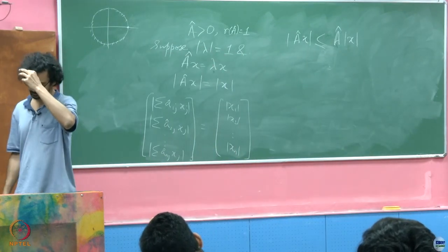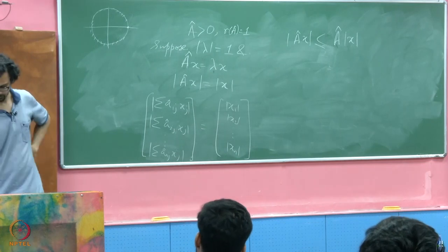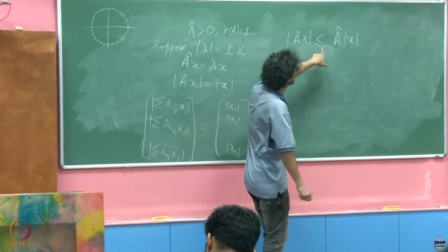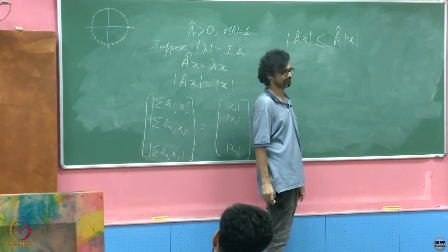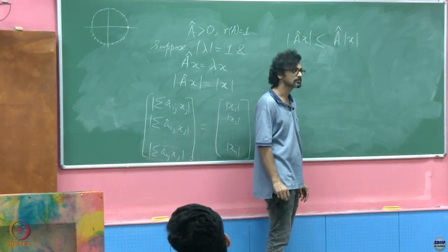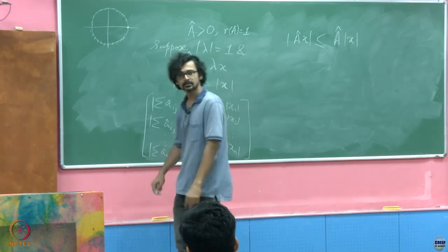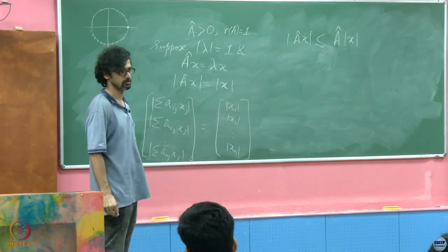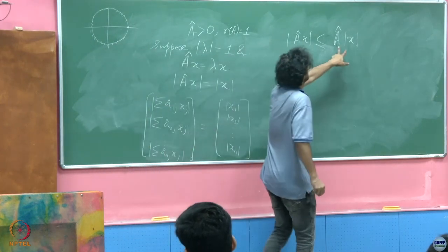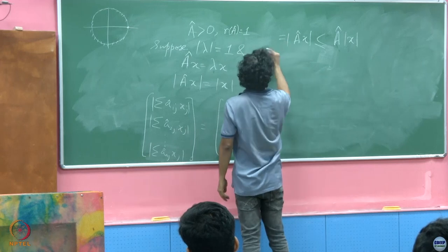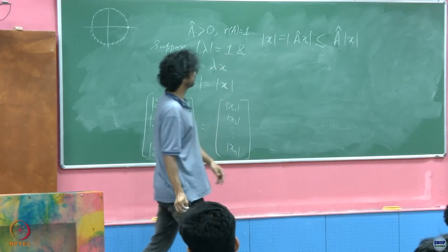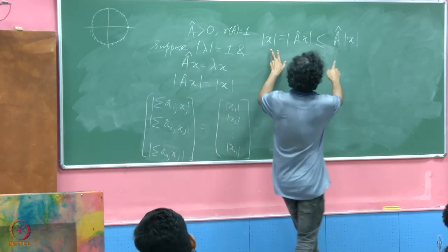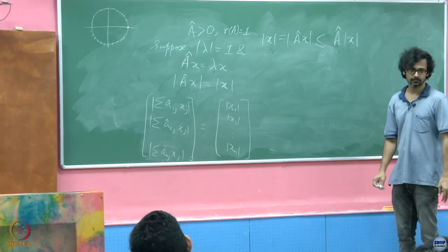If this inequality is true — and not just true but actually equal — then we will be done, because we started with the assumption that |λ| = 1. So we are led to the conclusion that |Â x| = Â |x|, and if we can show this is actually an equality, we will be done.